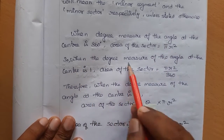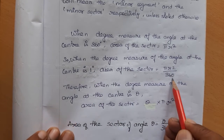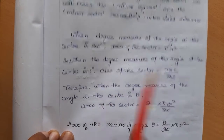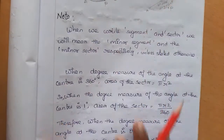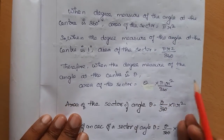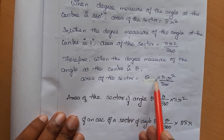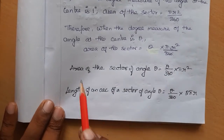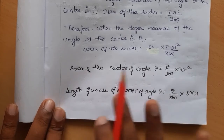When the degree measure of the angle at the center is one degree, the area of the sector is πr²/360. Therefore, when the angle at the center is theta, the area of the sector equals theta/360 × πr². This is our formula: area of sector of angle theta = (θ/360) × πr².